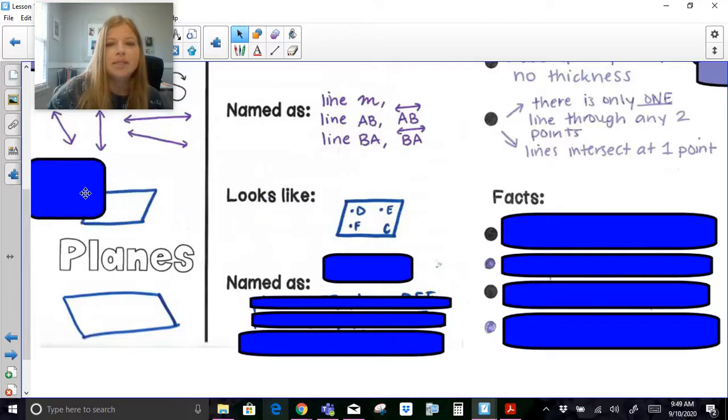Planes. Here's an example of what a plane looks like. Let me describe my drawing here. I've got point D, point E, point F. They all have dots next to them. And then this is a letter C in the corner of the plane.